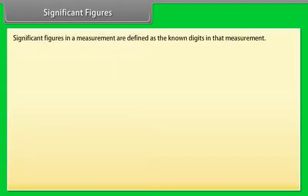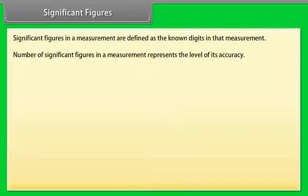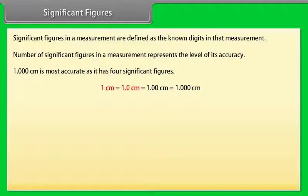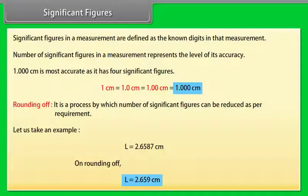Significant Figures: Significant figures in a measurement are defined as the known digits in the measurement. Number of significant figures in a measurement represents the level of its accuracy. It means more the number of significant figures in a measurement, more accurate that measurement is. Let us take an example: 1.000 centimeter is most accurate as it has 4 significant figures. Rounding off: It is a process by which number of significant figures can be reduced as per requirement. Let us take an example: L is equal to 2.6587 centimeters. On rounding off, L is equal to 2.659 centimeters.